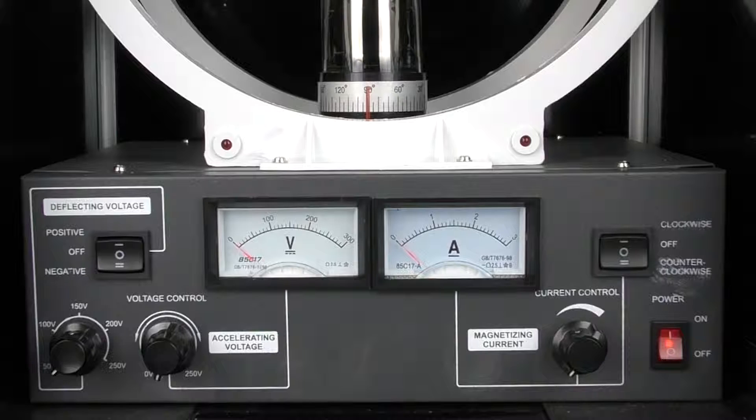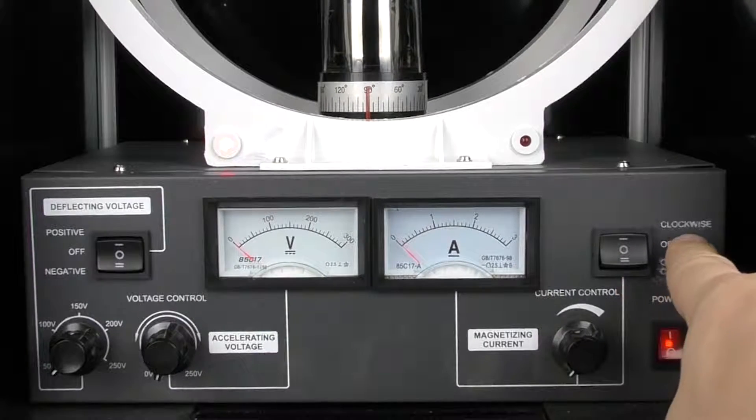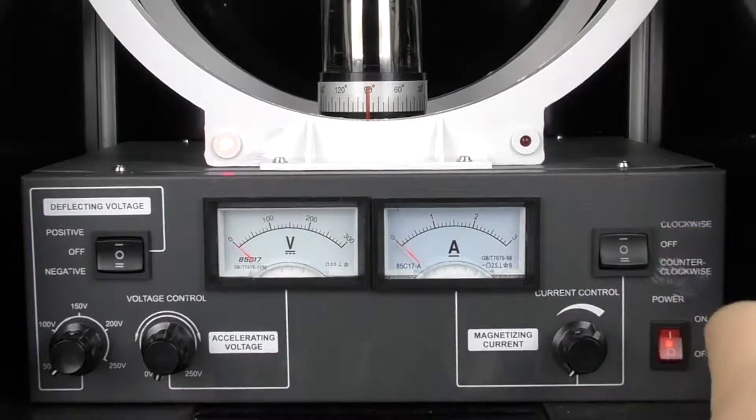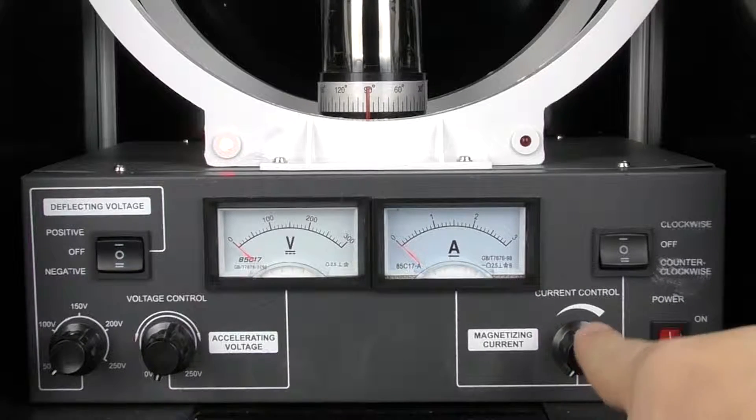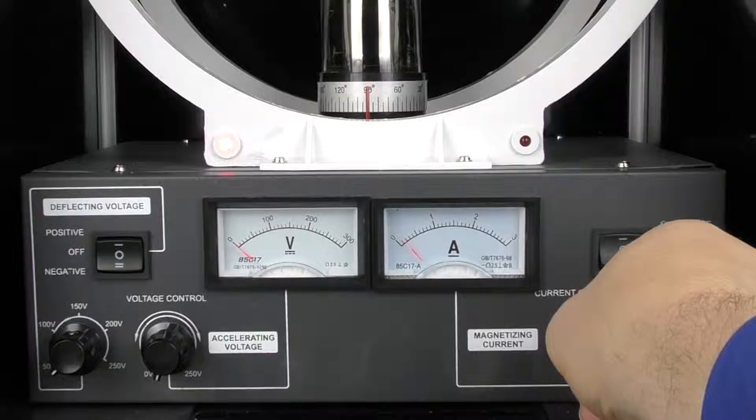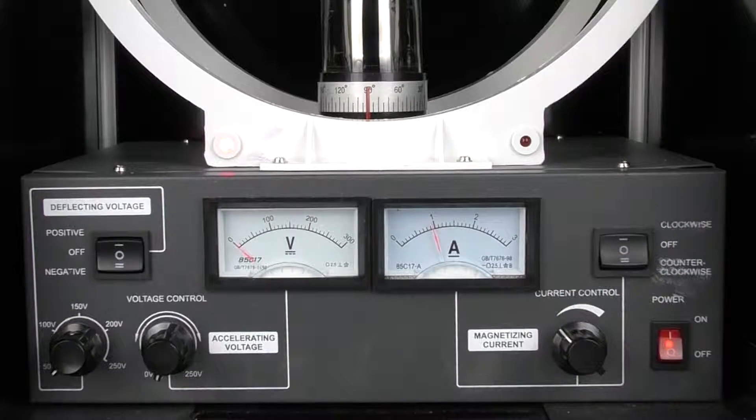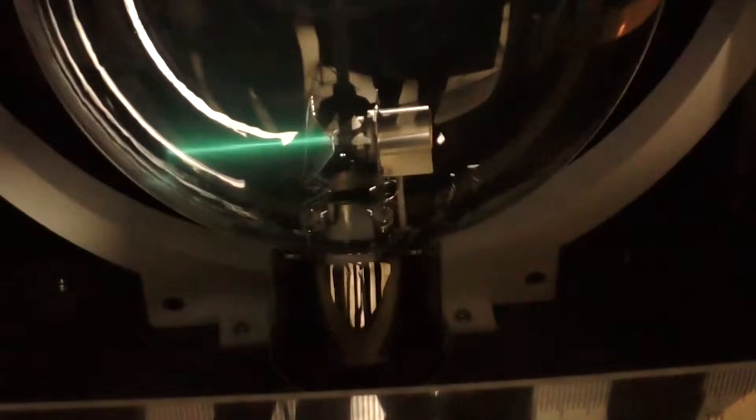When you're doing the actual experiment, you want to turn this to clockwise, and this shows you the direction that the current is going in the Helmholtz coils. Then you adjust the current, and then you can actually get measurements, which we're going to do right now. So we have a beam showing because our accelerating potential is high enough.